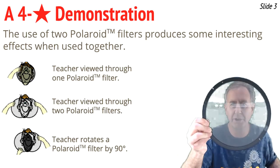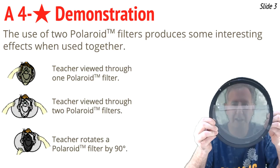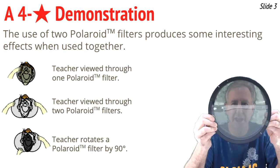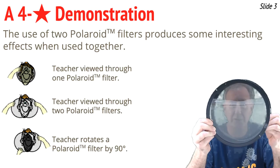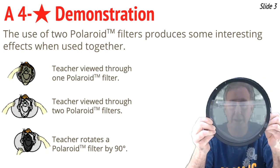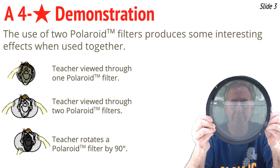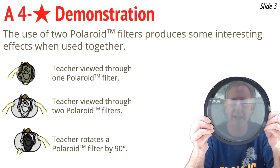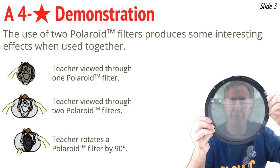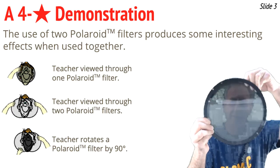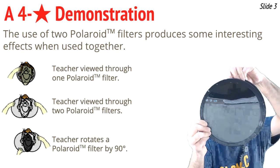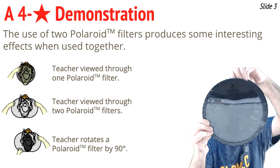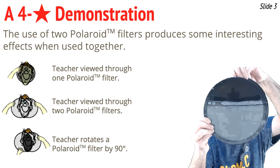Here's the first filter, and here's the second filter. What you notice is having one filter isn't a whole lot different than having two filters — it blocks the light, and I'm not as bright as usual. Until I take that second filter and rotate my hand from the 3 o'clock position to the 12 o'clock position. And now all of a sudden, I disappear.